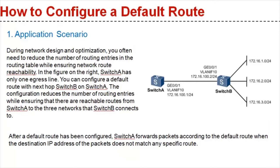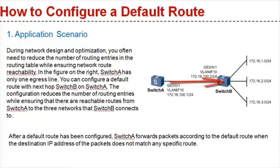During network design and optimization, you often need to reduce the number of routing entries in the routing table while ensuring network route reachability. In the figure on the right, switch A has only one egress line and switch B is always the next hop from switch A when switch A needs to connect to an external network. You can configure a default route using switch B as the next hop on switch A. This reduces the number of routing entries while ensuring that there are reachable routes from switch A to the three networks that switch B connects to.